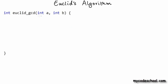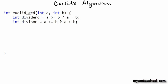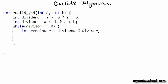We call our function Euclid GCD since it computes GCD using Euclid's algorithm, and it takes two integers A and B as input. Before we perform the first remainder operation, we need to set up the dividend and the divisor. The dividend is the greater value of A and B, accomplished using the ternary operator — if A is greater than B we choose A, otherwise we choose B. Similarly, we use the ternary operator to set up the divisor. As long as the divisor is not 0, we compute our remainders using the modulo operator.